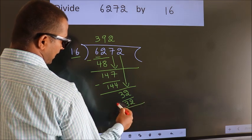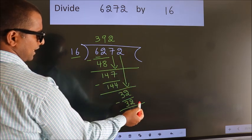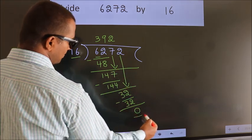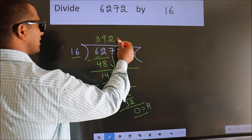Now, we subtract. We get 0. No more numbers to bring it down. So, we stop here. This is our remainder. This is our quotient.